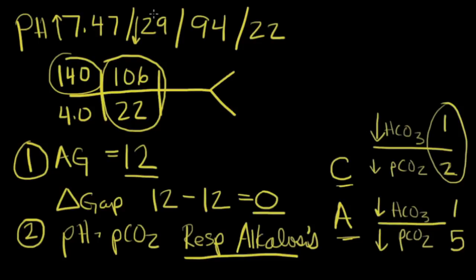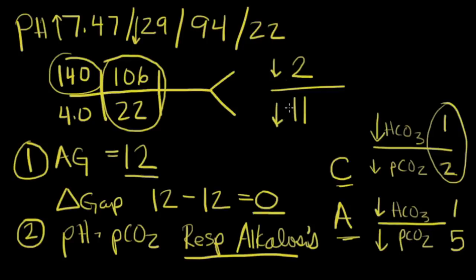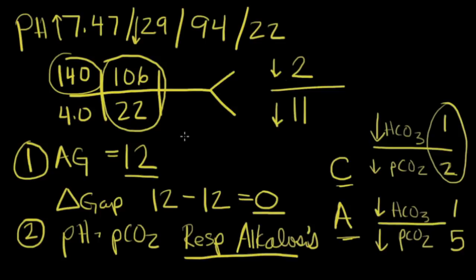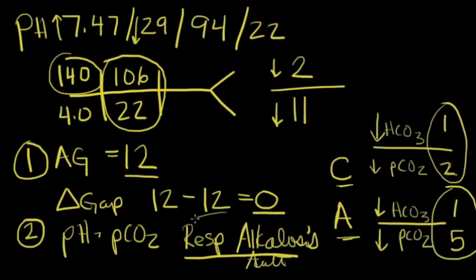The PCO2 went from 40 down to 29 — a drop of about 11 points. The bicarb dropped by about 2 points, from a normal of 24 down to 22. So our ratio is 2 over 11. That is very similar to 1 over 5, which fits the acute pattern. Therefore the answer is that this is an acute respiratory alkalosis.